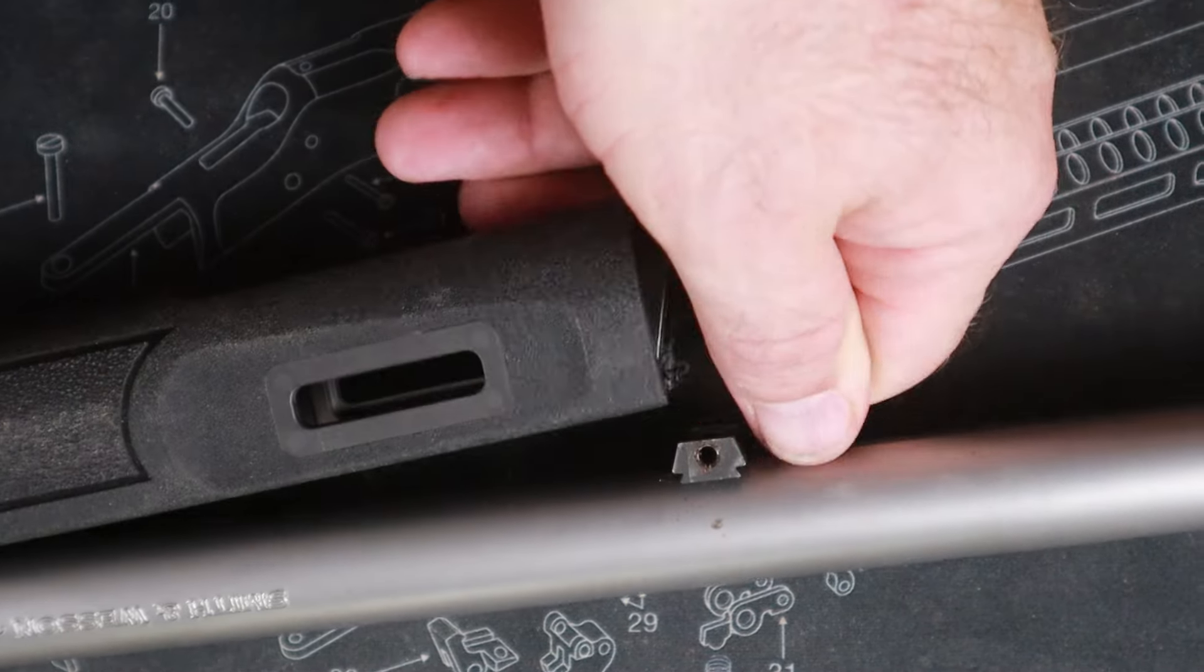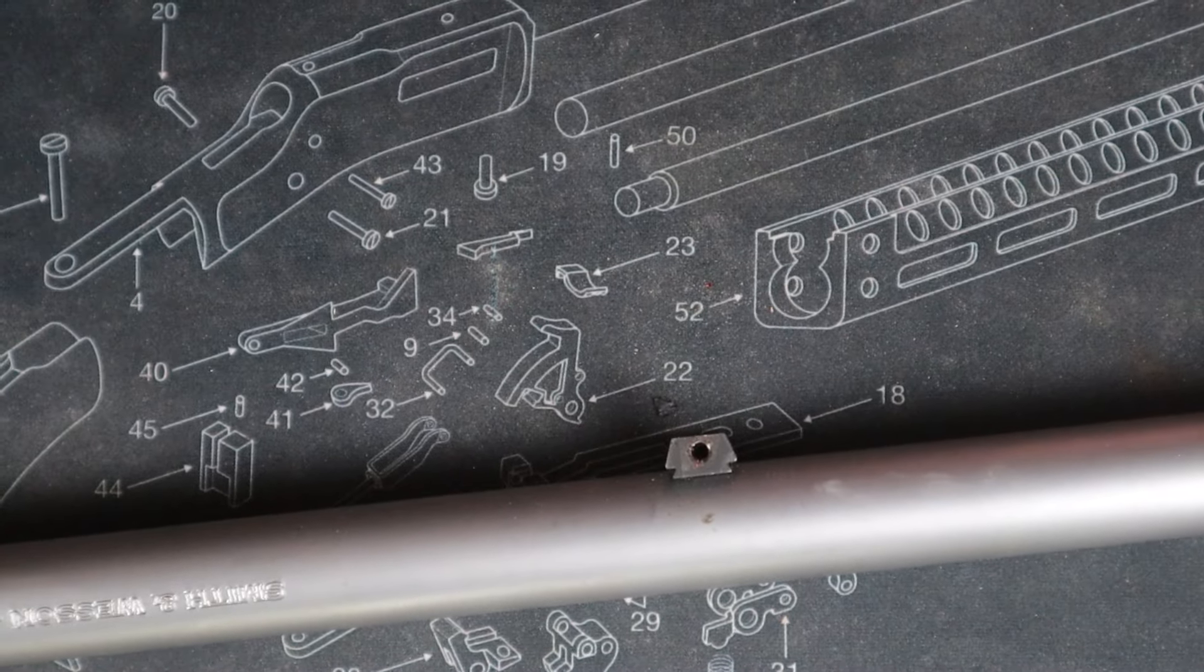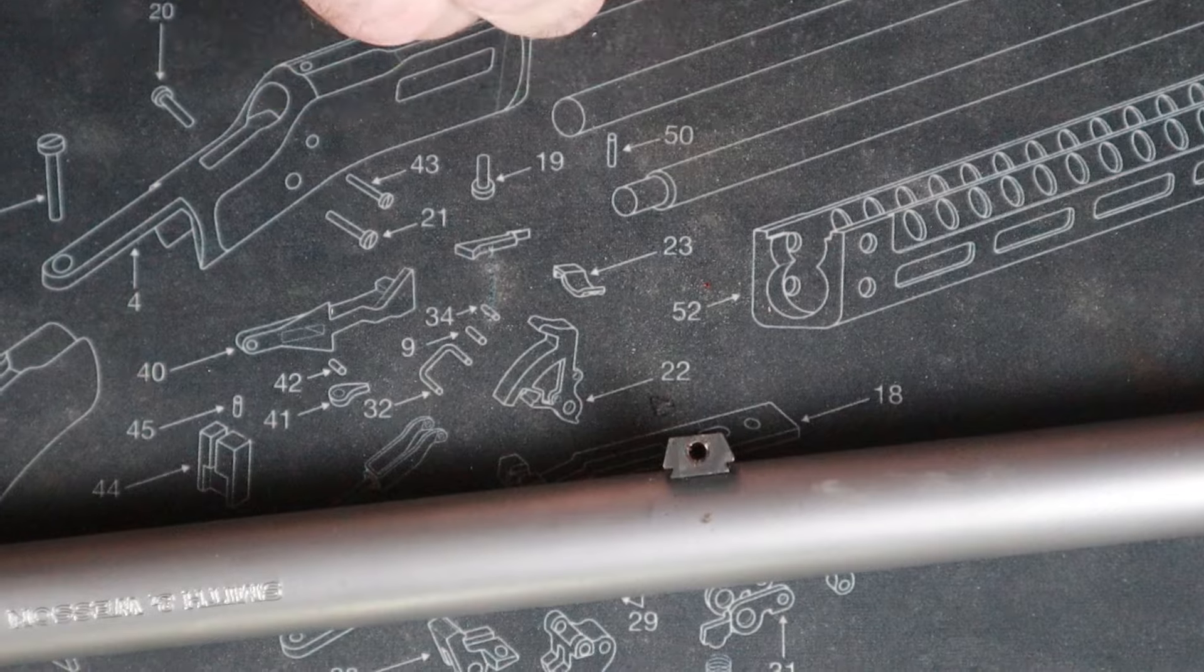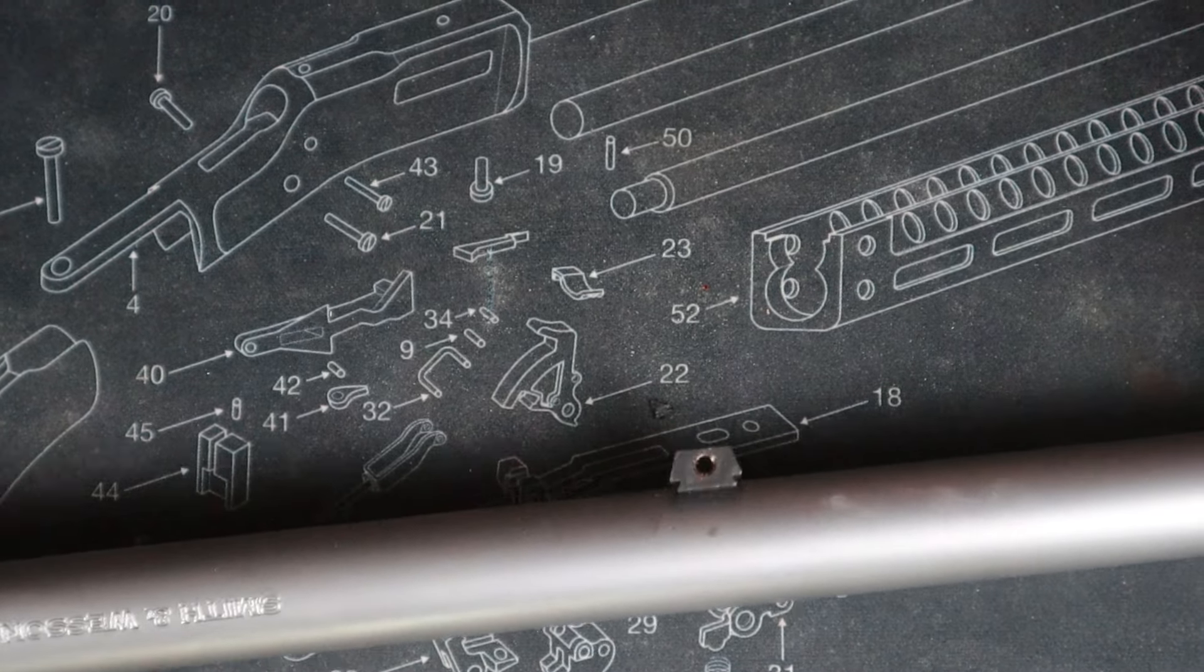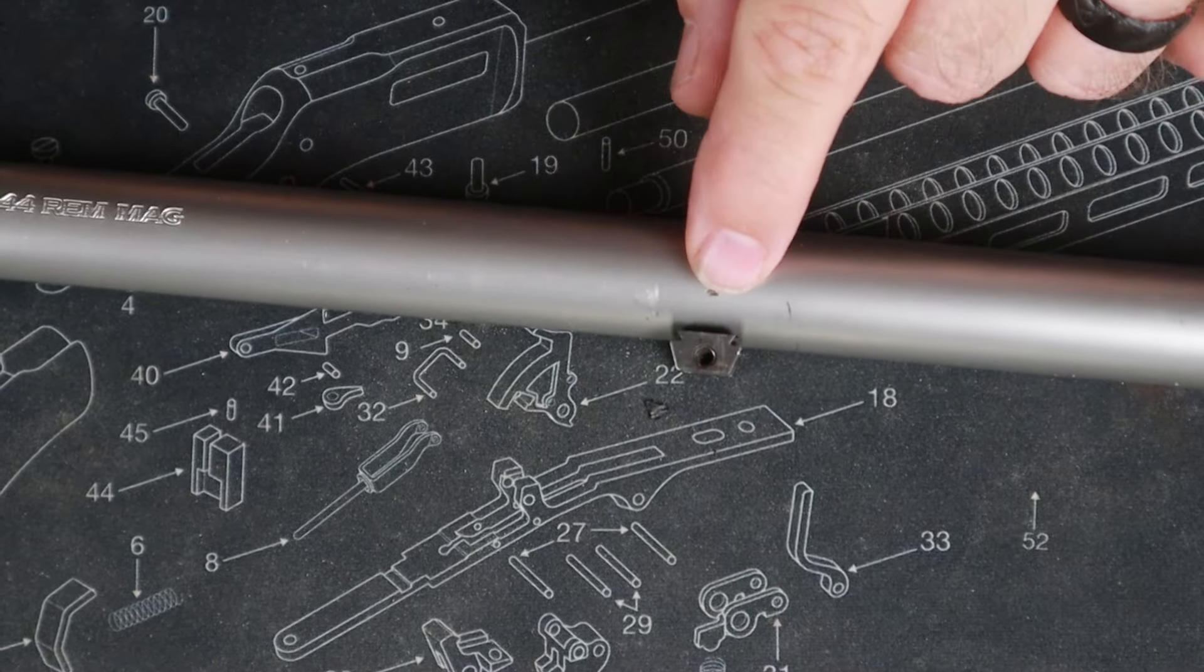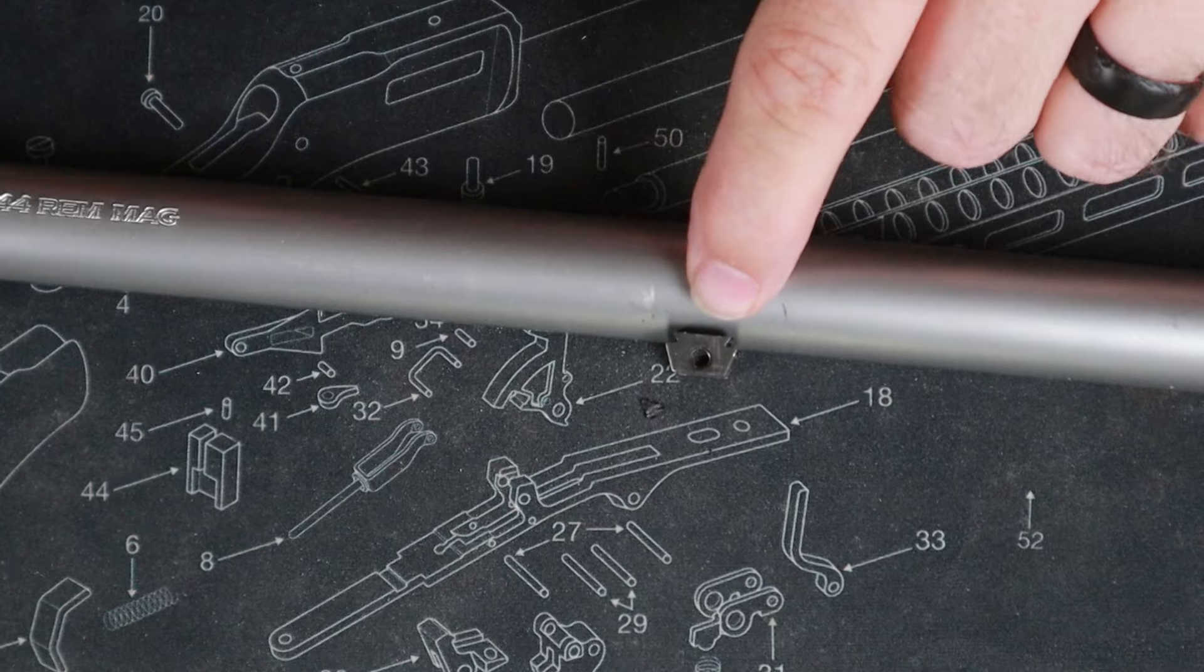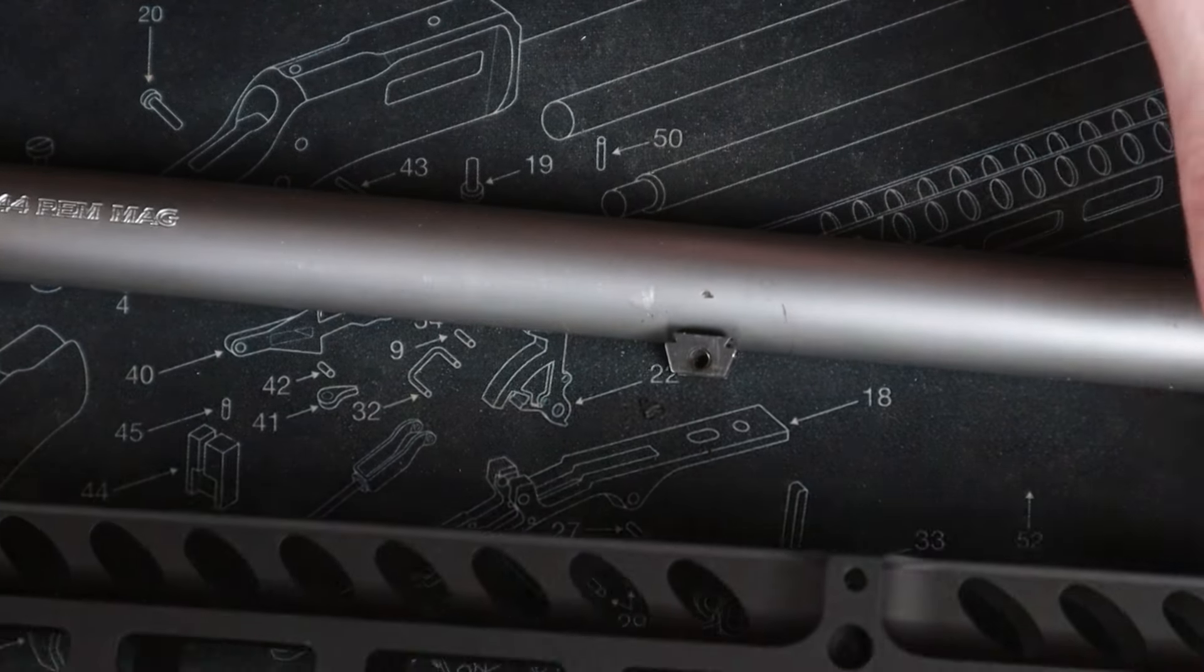There goes the factory end cap, here goes the factory handguard. We're going to take those and set them to the side for safekeeping. And now see how simple this is? We're reusing the factory tenon because Smith & Wesson cut this at .400 versus .375 like the other manufacturers.